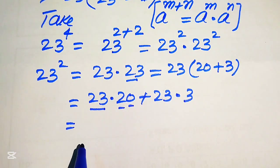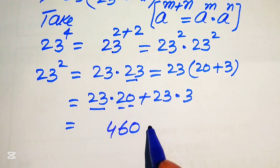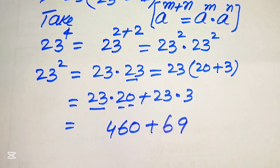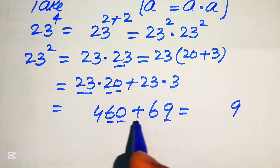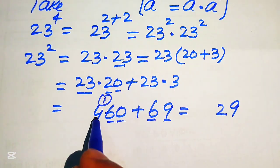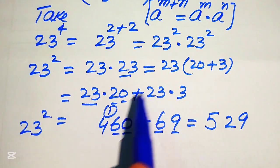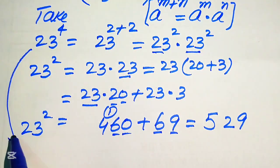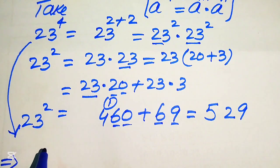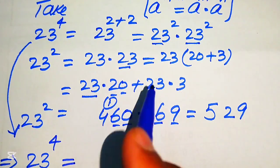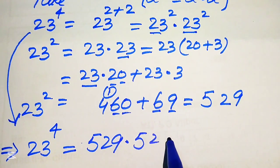We consider this as a one-digit and two-digit multiplication. Multiplying: 0 times the number gives 0; 2 times 23 gives 46; and 3 times 23 gives 69. Summing up: 0 plus 9 is 9; 6 plus 6 is 12, write 2 carry 1; 4 plus 1 is 5. So 23 squared equals 529. We now place this value into the expression, so 23 to the power of 4 equals 529 multiplied by 529.